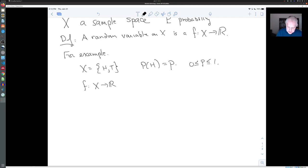Let's define a function from X to R, which says that f of heads is one and f of tails is zero. This is an example of a random variable. It's called the Bernoulli random variable with parameter P.